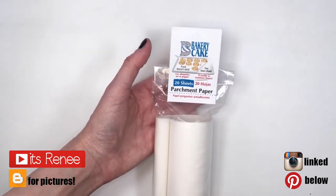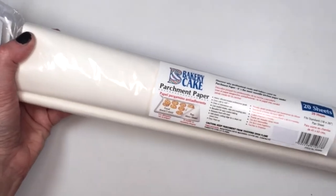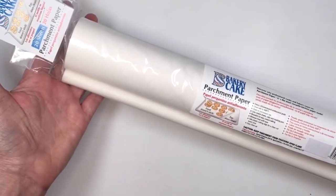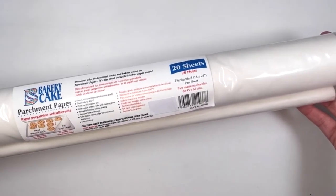Hey guys, it's Renee. For this hack or tip, I'm going to be using this parchment paper. I'm going to be testing this out for the first time. It's by Bakery and Cake, I think this is how I say it. I never know if it's Bakery Cake or Bakery and Cake, just let me know.